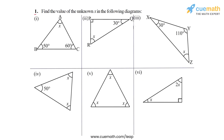In question 1 we have to find the value of the unknown x in the following diagrams. We will apply the angle sum property to each of these triangles. The angle sum property says that the sum of the three angles of a triangle must be equal to 180 degrees. Let's start with part 1.